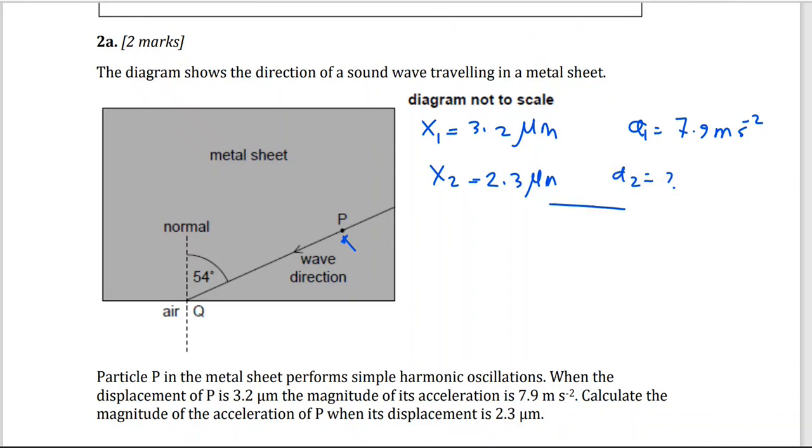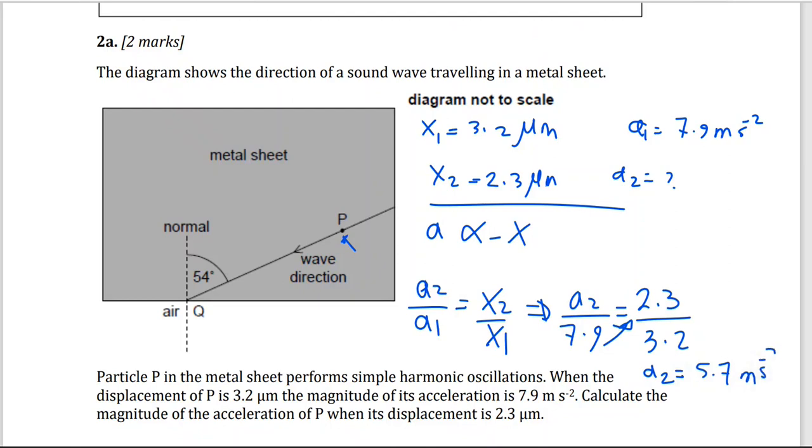Now, simple harmonic motion. Acceleration is directly proportional with negative of the displacement. So I can create a formula using this equation. I can write it as A2 over A1 equals X2 over X1. So A2, we don't have it, divided by A1, 7.9 equals X2 is 2.3 divided by 3.2. Micro and micro, we cancel each other out. Cross multiplication, you should get A2 equal 5.7 meters per second squared.